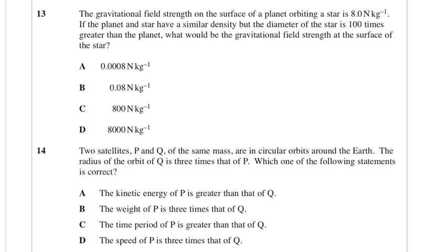Gravitational field strength on the surface of a planet is 8.0 newtons per kilogram. The planet and the star have a similar density, but the diameter of the star is 100 times greater than the planet. So if they have a similar density but it's 100 times greater, the volume is 100 cubed bigger. If it's a similar density, your mass is going to be multiplied by 100 cubed. But then on your bottom line you would have 100 squared, so you end up with essentially times by 100, which would be 800 newtons per kilogram.